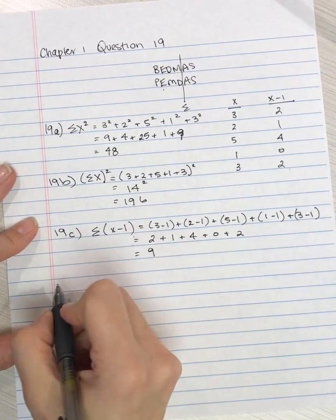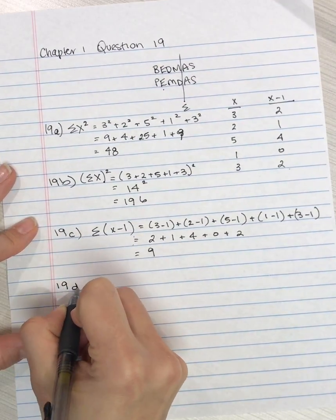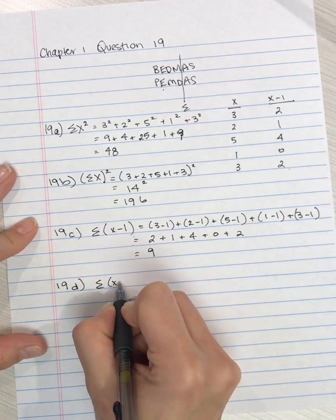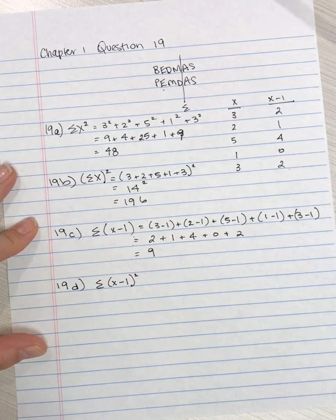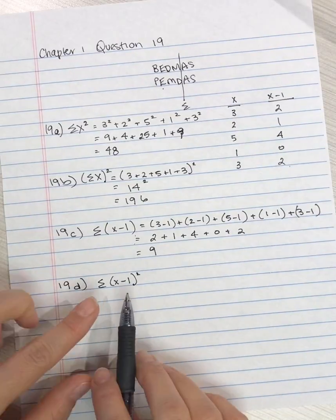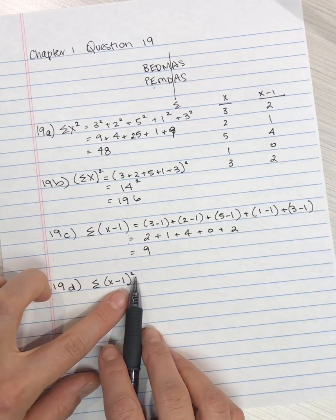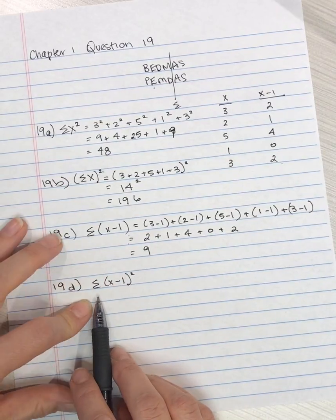The last part of this question, d, is the sum of (x - 1) squared. So we're going to do what's in the brackets first, then we're going to square it, and then we're going to add it up.